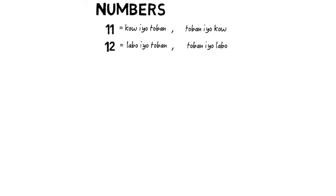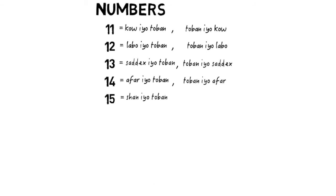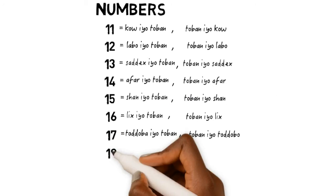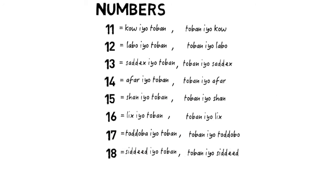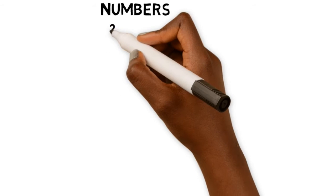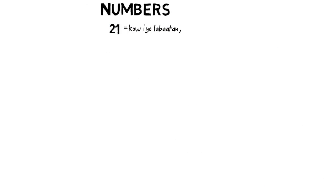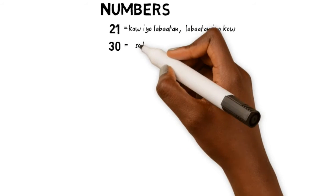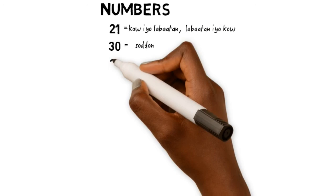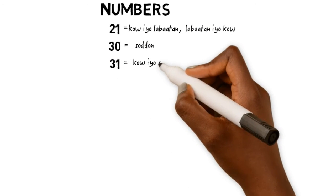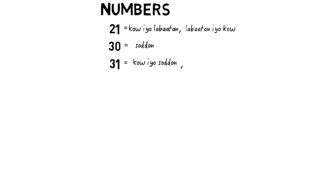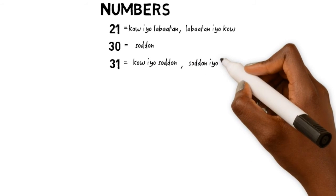The two dialects drift here and meet at 20, which is 'Lawatan.' Then drift back off — hence 21 is 'Kou ii Lawatan' in the north, while in the south it's 'Lawatan io Kou.' Same case for 30, which is 'Sodom,' but when we arrive at 31 it's 'Kou ii Sodom' in the north and 'Sodom ii Kou' in the south.